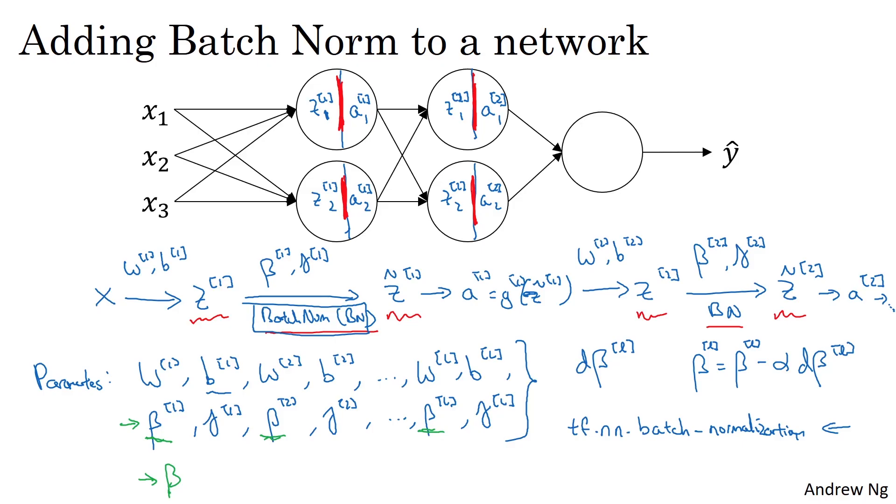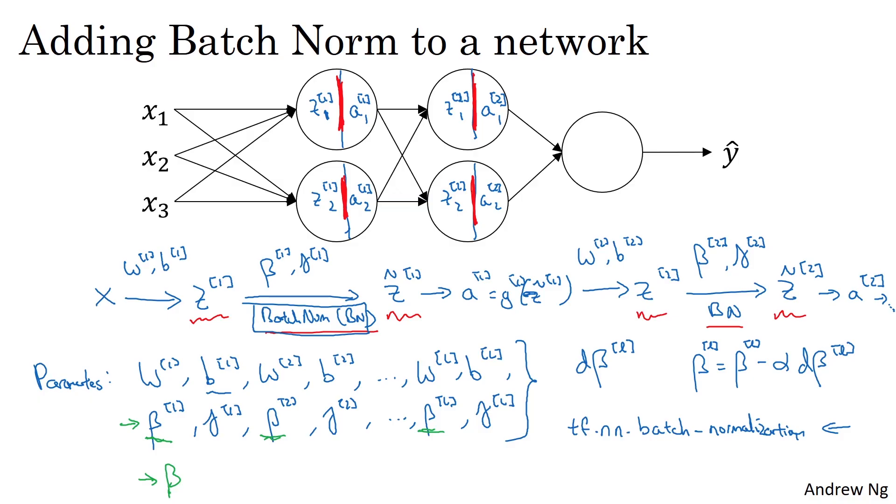Now, so far, we've talked about batch norm as if you were training on your entire training set at a time, as if you're using batch gradient descent. In practice, batch norm is usually applied with mini-batches of your training set.